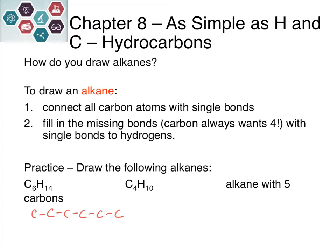In the first example we have C6. We draw the 6 carbons in a chain linked with single bonds. Going around and giving each carbon four bonds total, we should use 14 hydrogens. The carbon on the left has one bond, so it gets three hydrogens. The next several carbons each have two bonds, so they each need two hydrogens. The one on the end has one bond and needs three hydrogens. Counting those up gives 14 hydrogens, just as the formula requires.